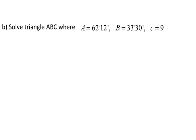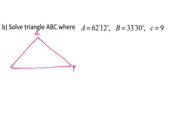Let's do another one. Angle A is 62 degrees 12 minutes, angle B is 33 degrees 30 minutes, and side c is 9. Degrees, minutes, and seconds is another notation for decimal degrees. I'll draw a generic triangle — it doesn't matter where you place A, B, and C for the sake of solving, and it's not drawn to scale.